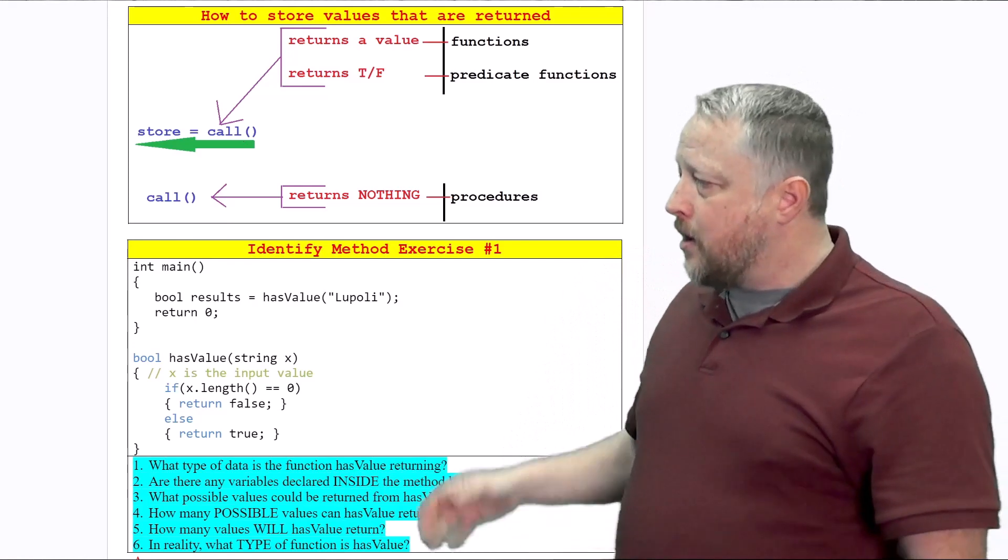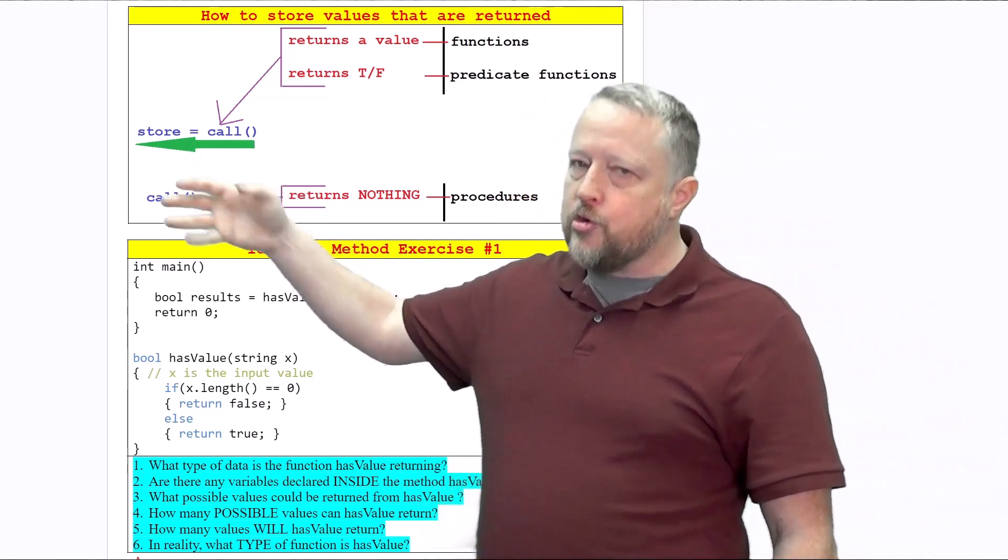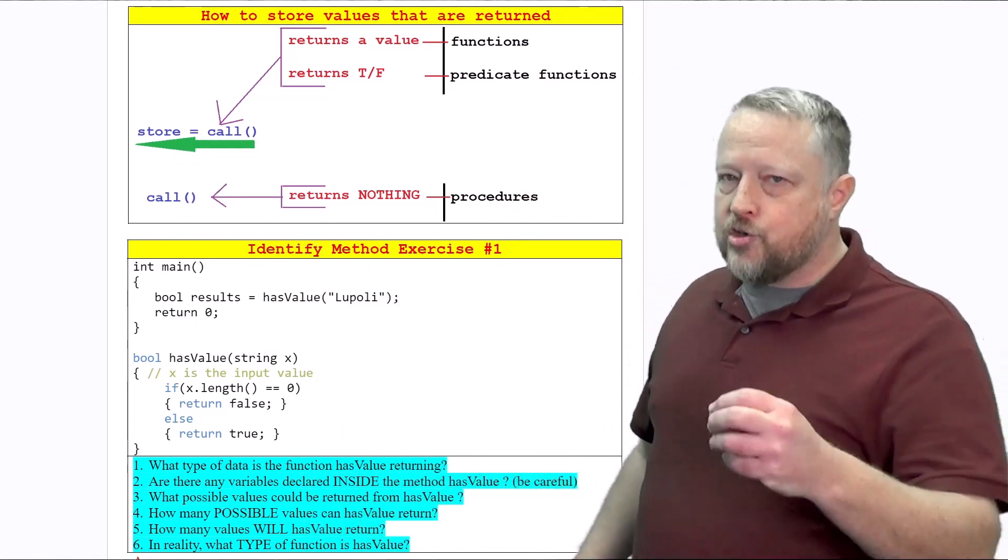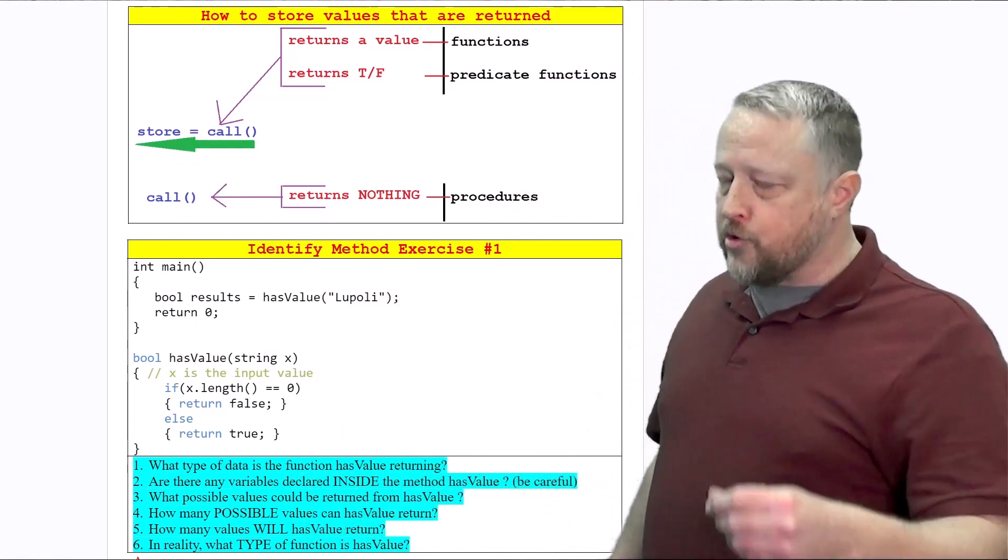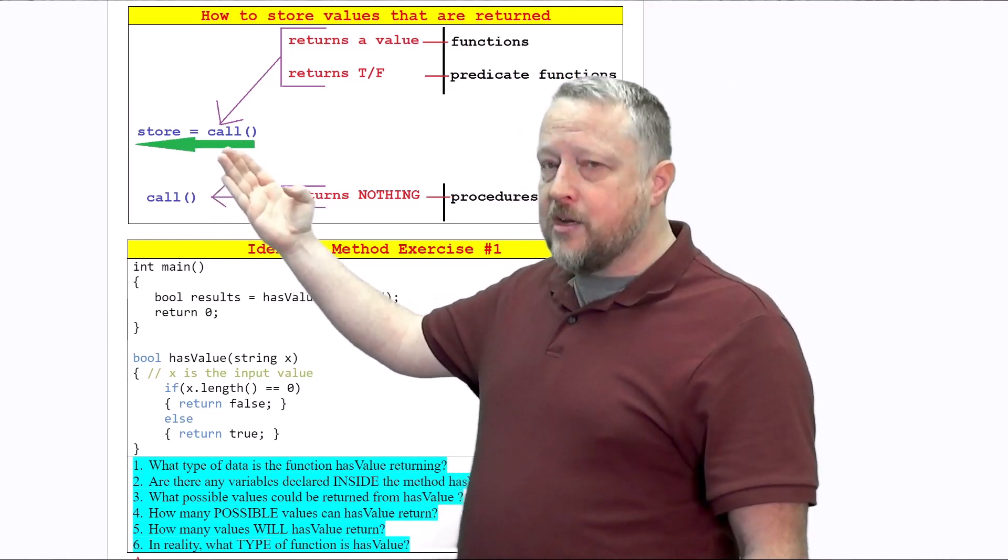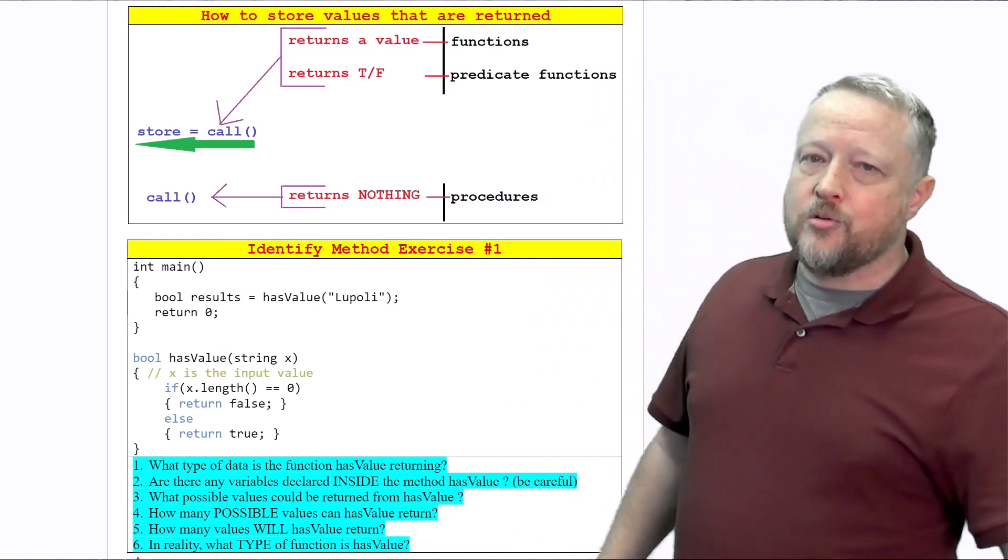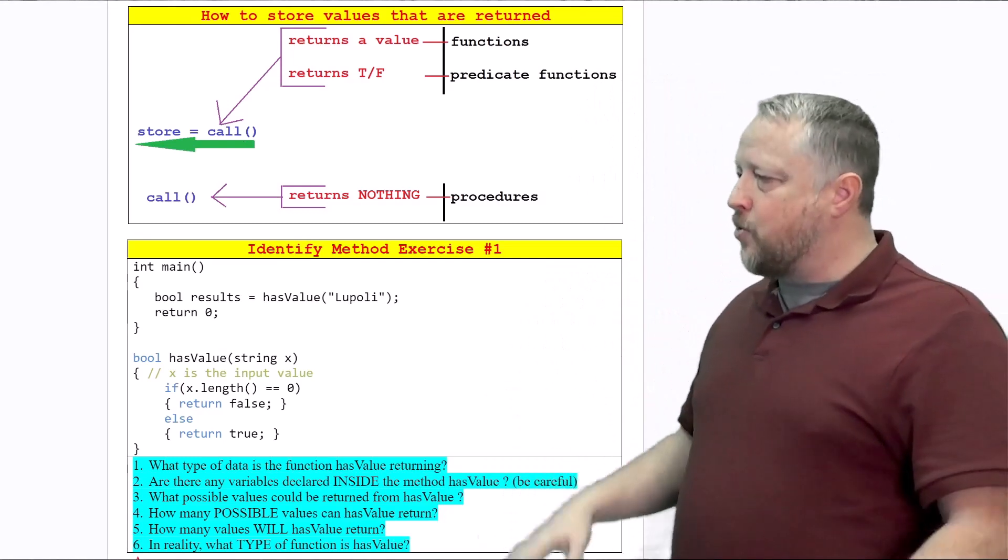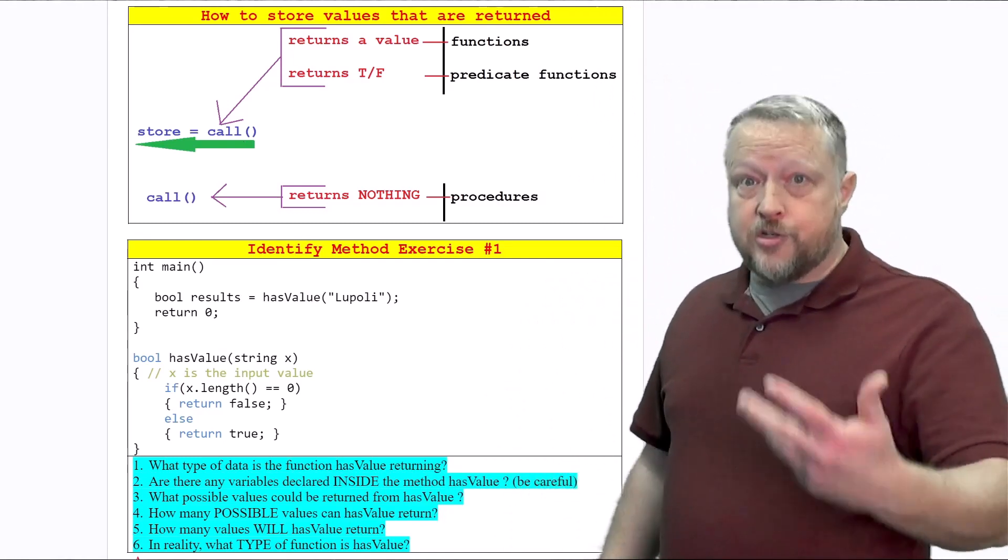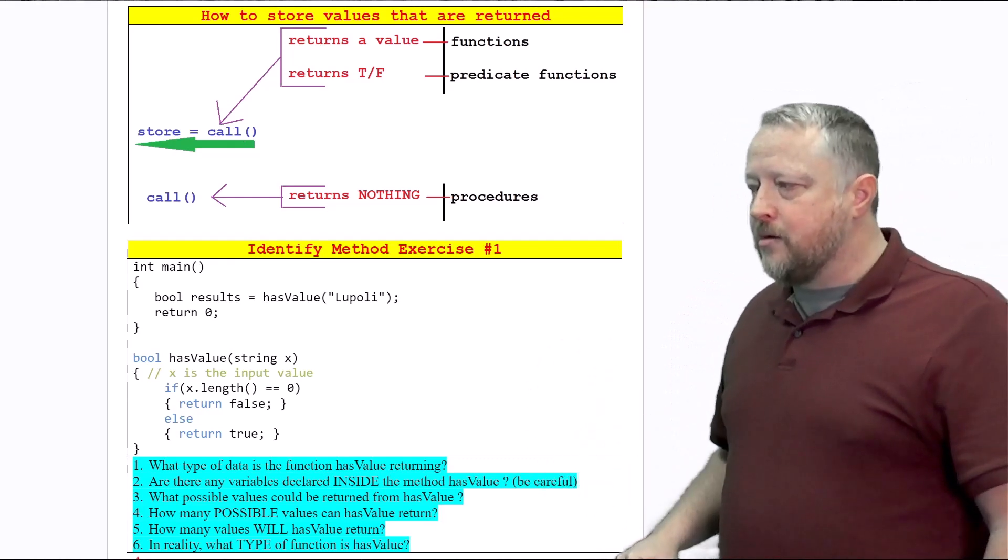You can tell if it's going to return a value usually by an equal sign that is just in front of the function call. Remember, the right hand side of the equal sign is going to be done first, and then we'll store the value onto the left hand side. That's the easy way of telling if functions are doing what.